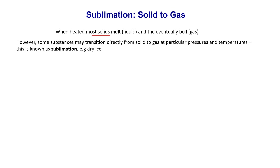Normally when we heat a solid, it melts into a liquid and eventually boils into a gaseous state. But some substances may transition directly from solid to gas at particular pressures and temperatures. For example, dry ice never forms a liquid — it goes directly from solid to gas. This process is called sublimation.